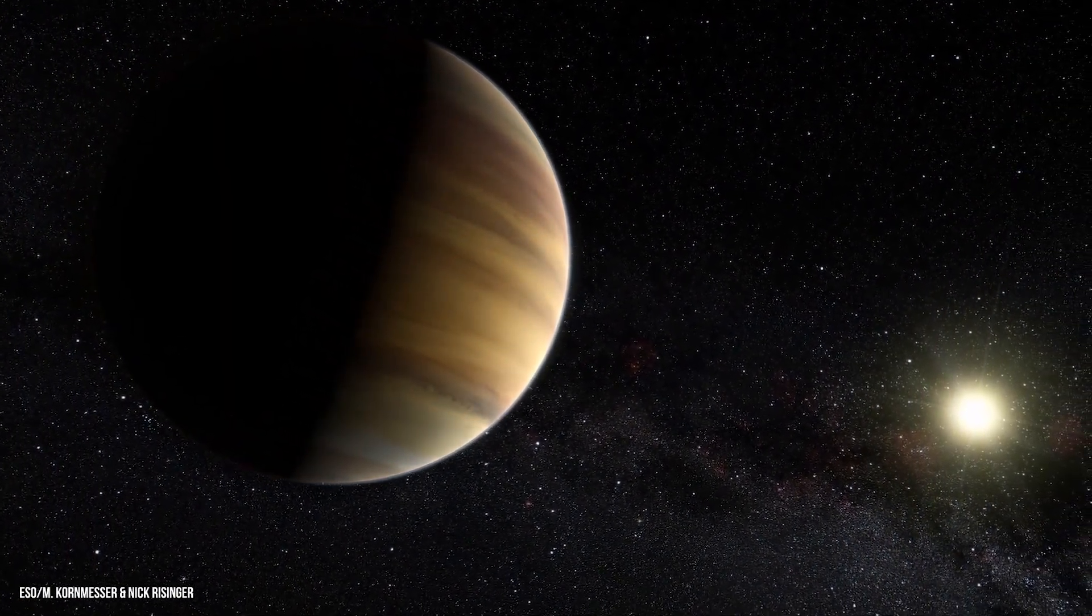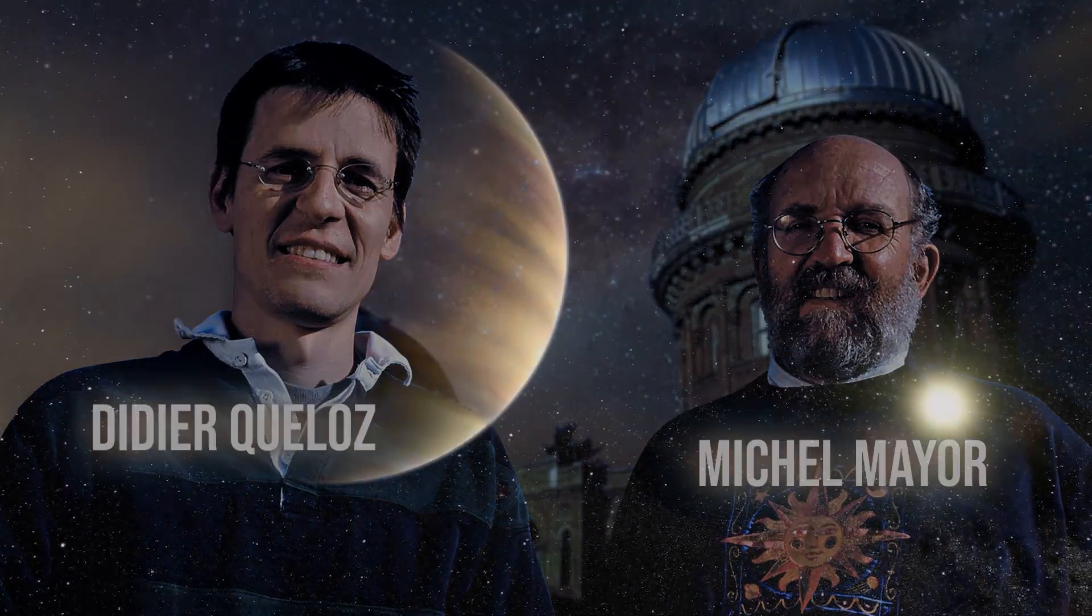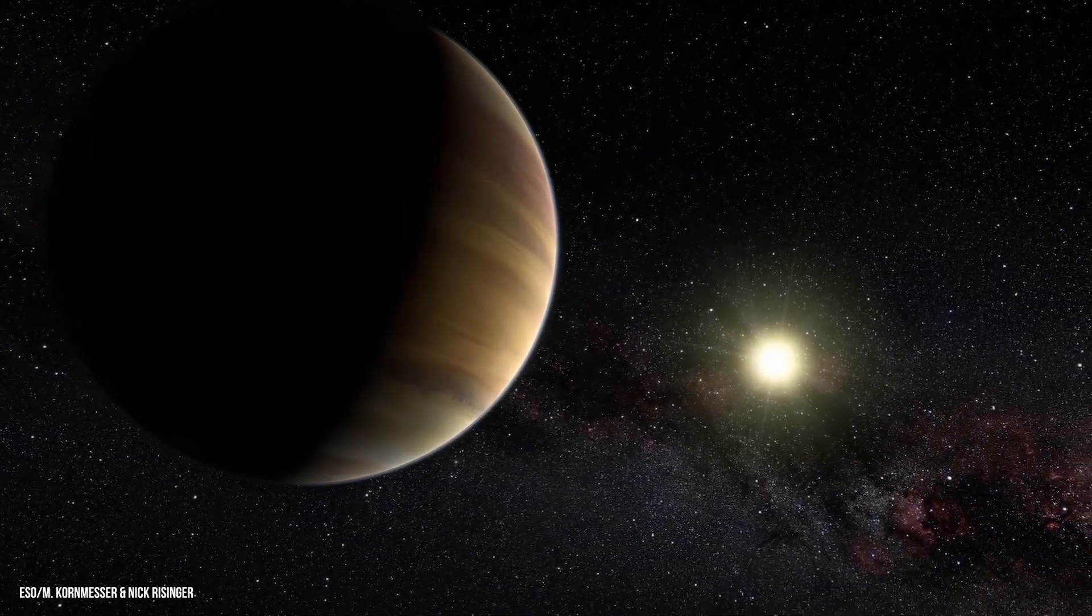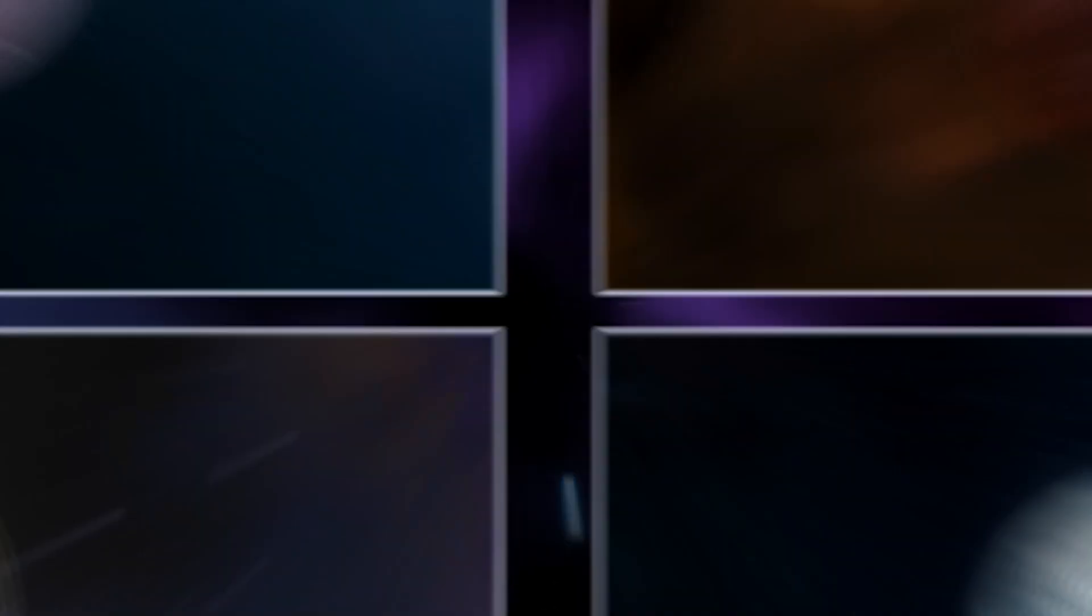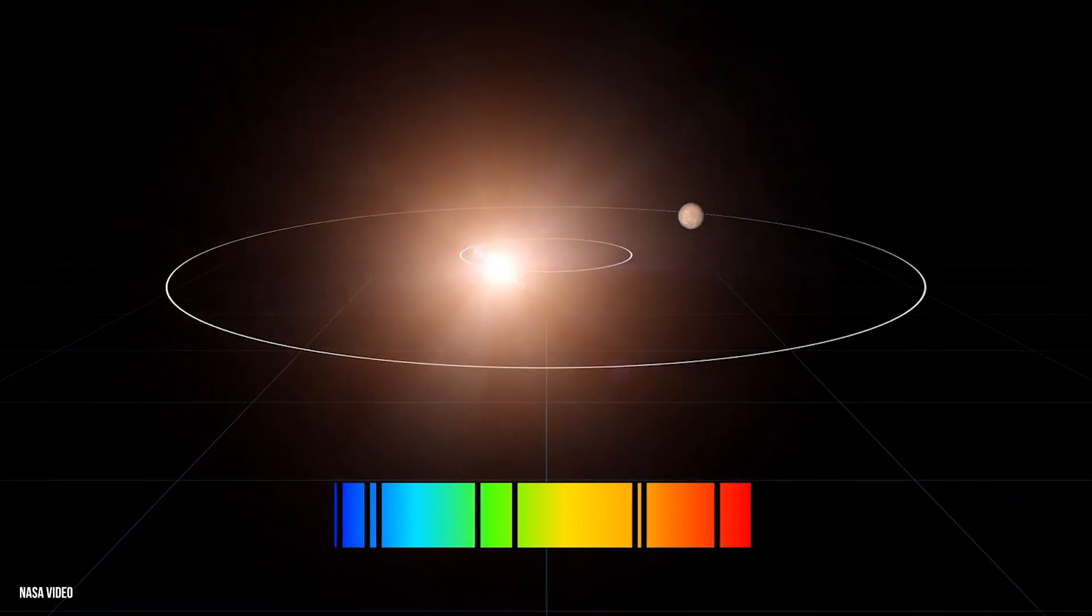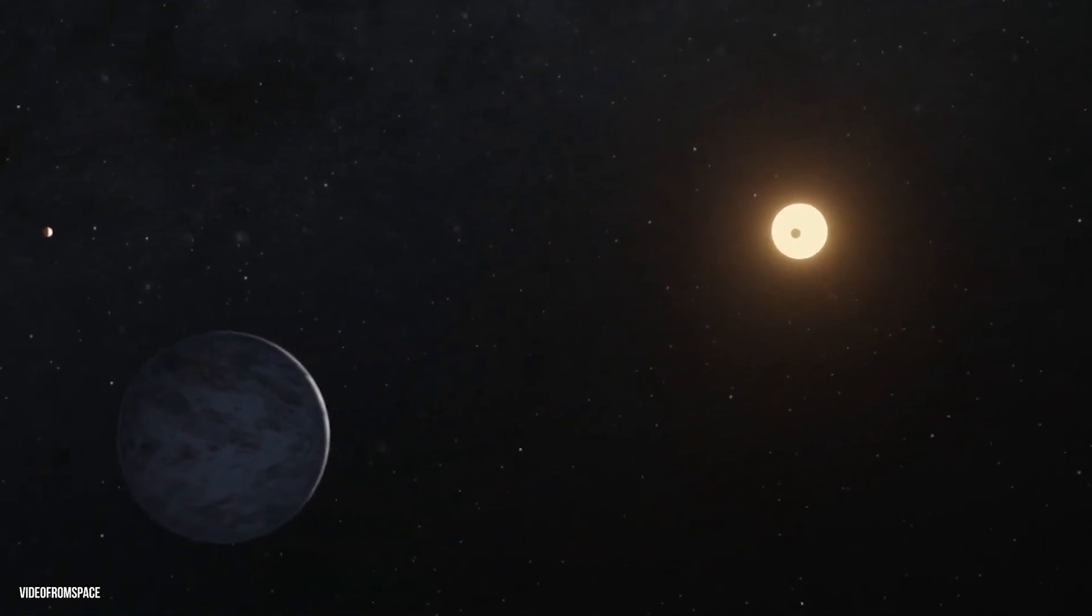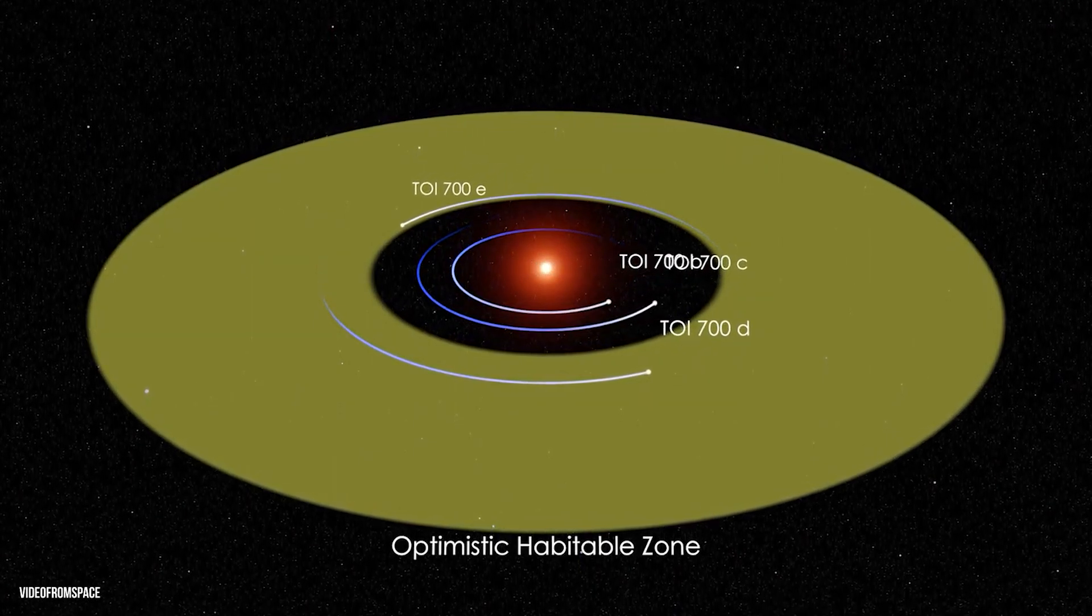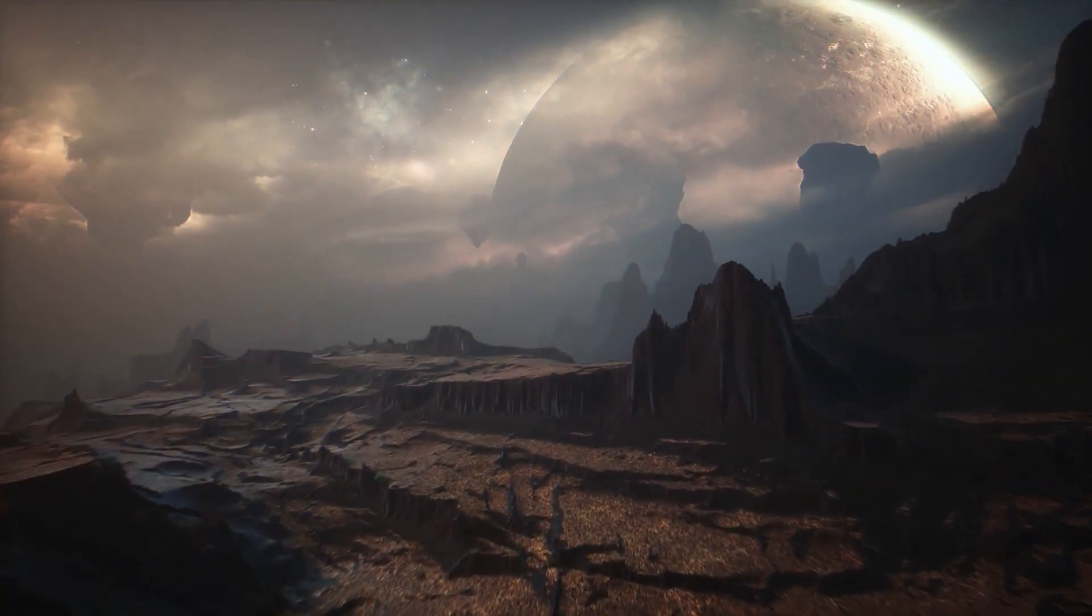In 1995, the first exoplanet orbiting a sun-like star was discovered by Swiss astronomers Michel Mayor and Didier Queloz. This discovery proved that other stars could also host planets, challenging the long-held belief that our solar system was unique. Since then, thousands of exoplanets have been discovered using various techniques, such as the transit method and radial velocity method. One of the most significant discoveries in the search for exoplanets was the realization that many of them are located within the habitable zone of their host star, the region where conditions are just right for liquid water to exist on a planet's surface. This finding challenged the belief that Earth was the only planet capable of sustaining life and sparked a renewed interest in the search for extraterrestrial life.